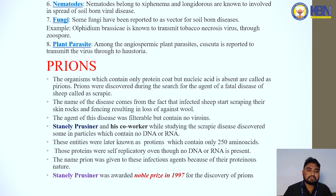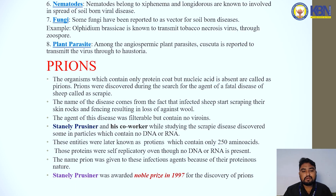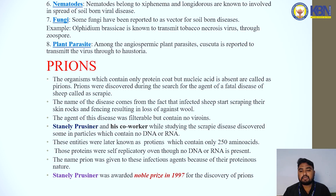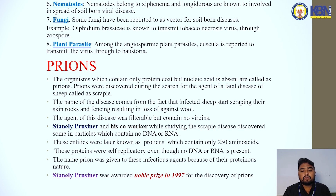The next topic is prions. Organisms which contain only protein but no nucleic acid are called prions. Prions were discovered during the study of the agent of the fatal disease of sheep called scrapie. The name comes from the fact that infected sheep start scraping their skin on rocks and fencing, resulting in loss of wool.